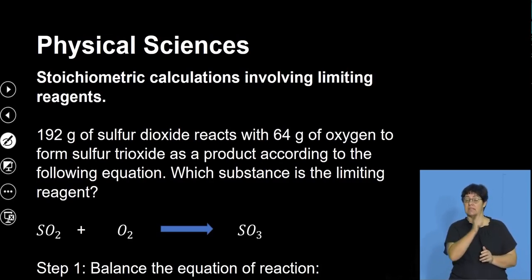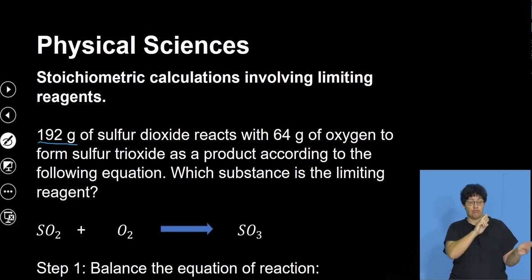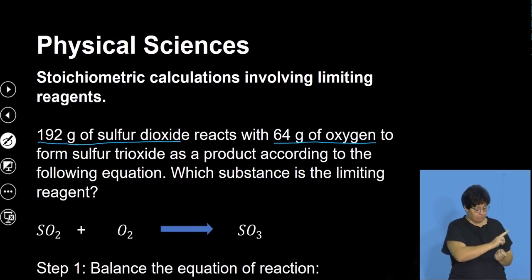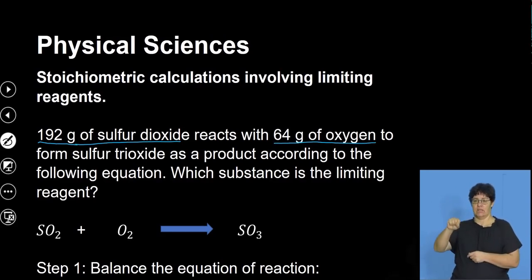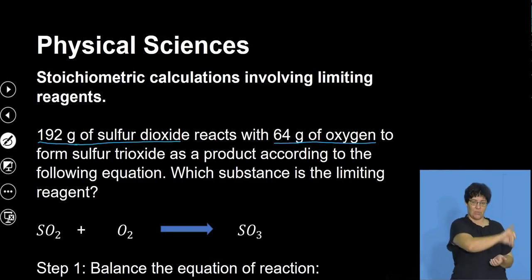We are told that we've got 192 grams of sulfur dioxide which reacts with 64 grams of oxygen. These are the two reactants. They form sulfur trioxide as a product according to the given equation. The question is: which substance is the limiting reagent?